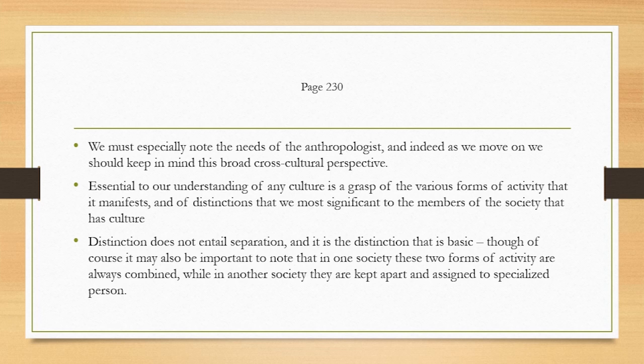Essential to understanding any culture is grasping the various forms of activity that are manifest and the distinctions most significant to the members of that society. When we observe someone carving wood or moving about in a circle with others, we must ask whether the activity is religious, political, economic, medical, or artistic. Even when the same act of carving or dancing has more than one character — both religious and artistic, say — we don't understand it unless we make this distinction. In one society these two forms of activity are always combined, while in another they are kept apart and assigned to specialized persons.